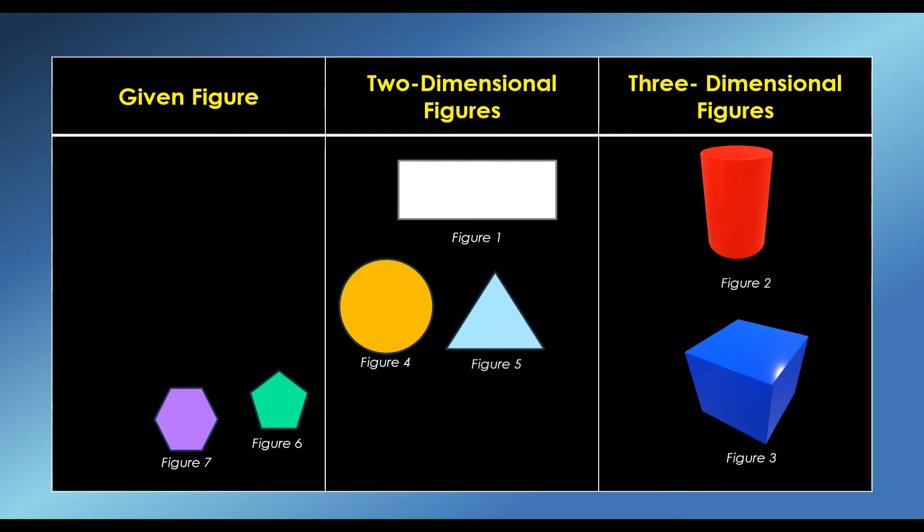Figure 5 is a triangle. A triangle is a three-sided polygon, 2D shape, that has three edges and three vertices.